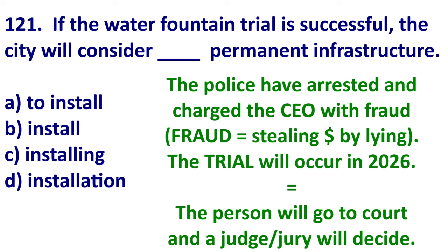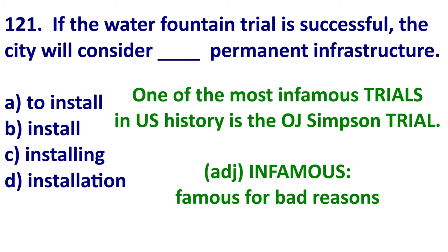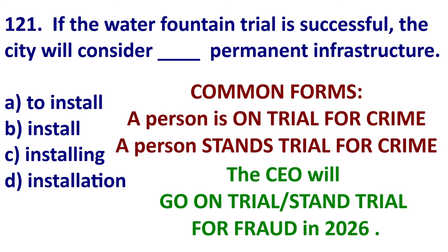An example could be: the police have arrested and charged the CEO with fraud. The trial will occur in 2026. So the person will go to court, go in front of a judge and jury. Or one of the most infamous trials in U.S. history is the O.J. Simpson trial. The common form is: a person is on trial for a crime, or a person stands trial for a crime. So we could say the CEO will go on trial for fraud in 2026.